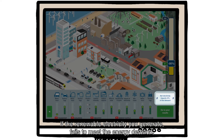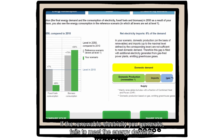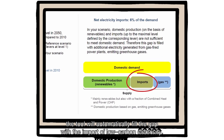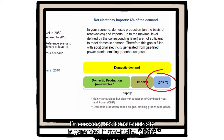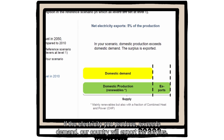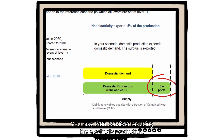A separate indicator shows you whether your scenario involves electricity import or export. If the renewable electricity you generate fails to meet the energy demand, the tool will automatically fill the gap with the import of low carbon electricity. If necessary, additional electricity is generated in gas-fuelled plants. If the electricity you produce exceeds demand, the country will export the surplus — you may then consider reducing electricity production.